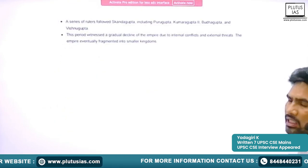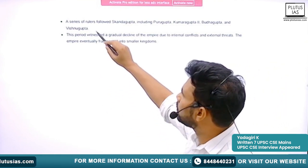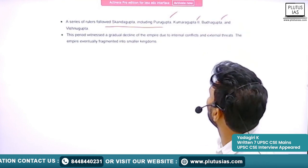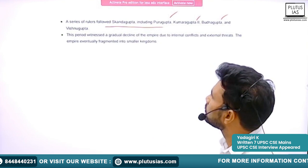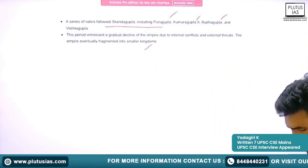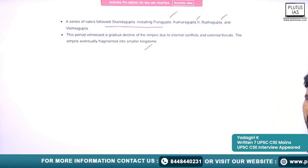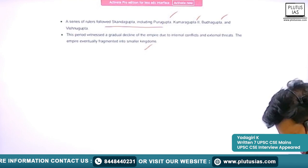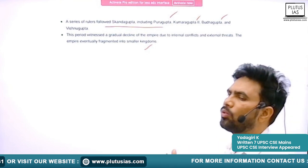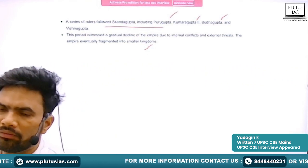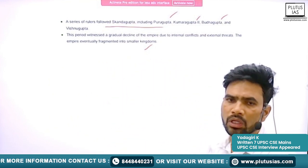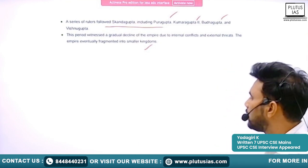After Skandagupta, a series of weak rulers followed — including Purugupta, Kumaragupta II, Buddhagupta, and Vishnagupta. After them, decline set in due to weak rulers, attacks from the Huns, internal factors, costly administration, and the inability to balance revenues, leading to the fall of the empire.